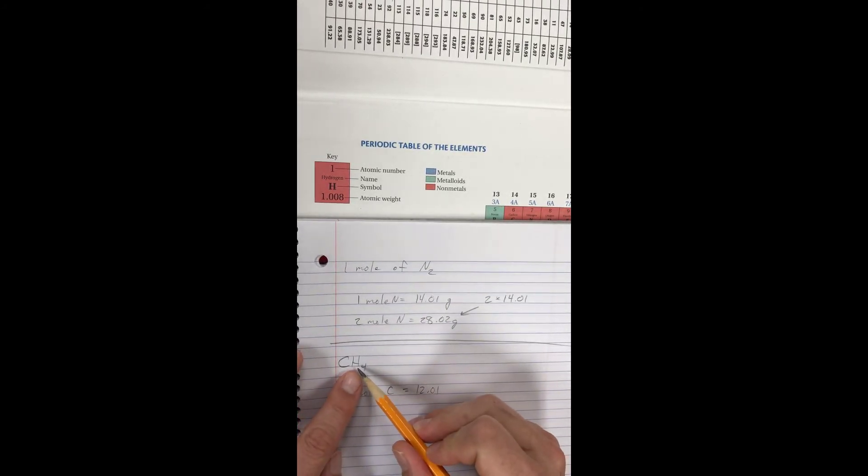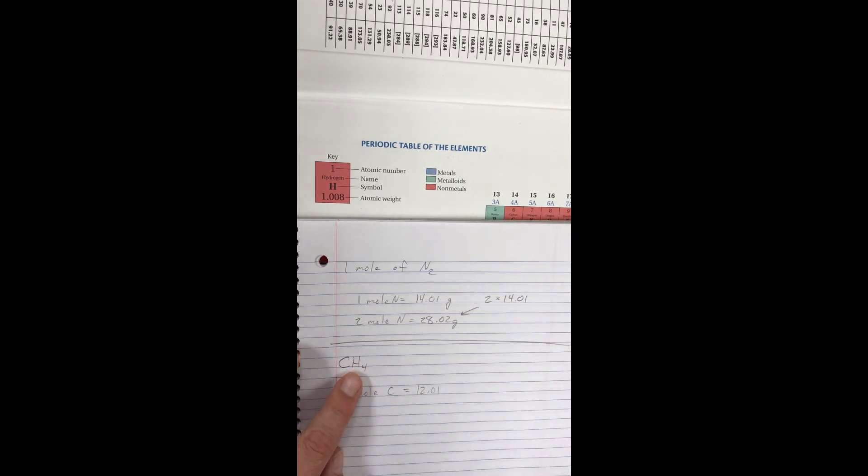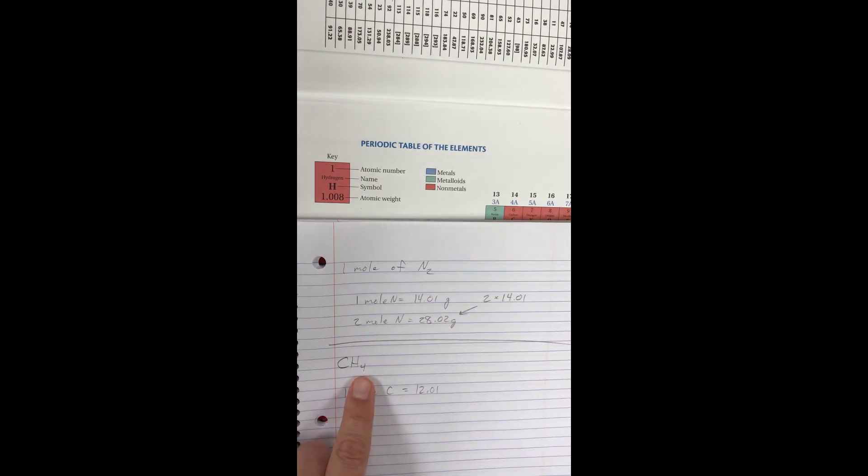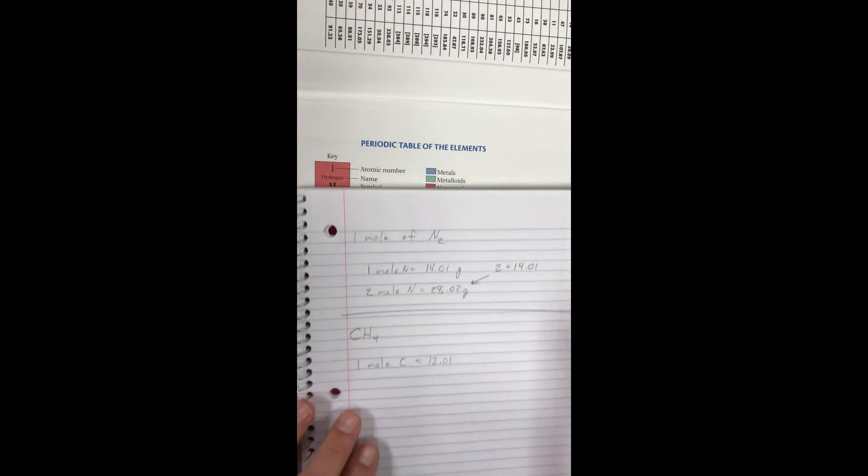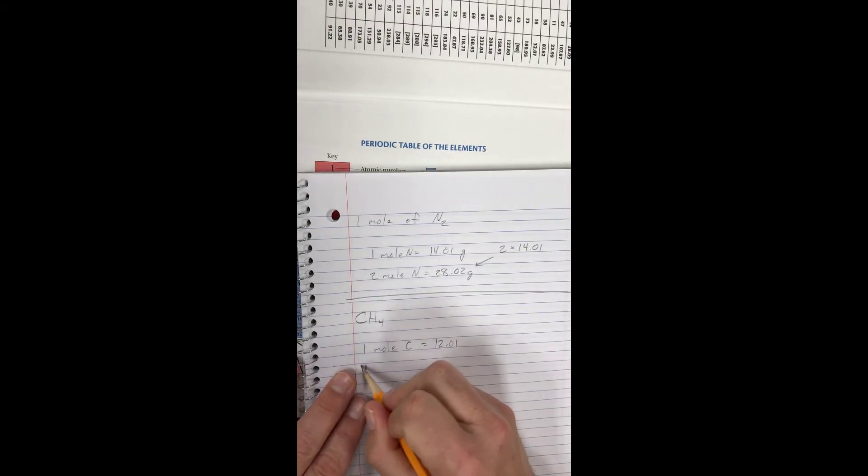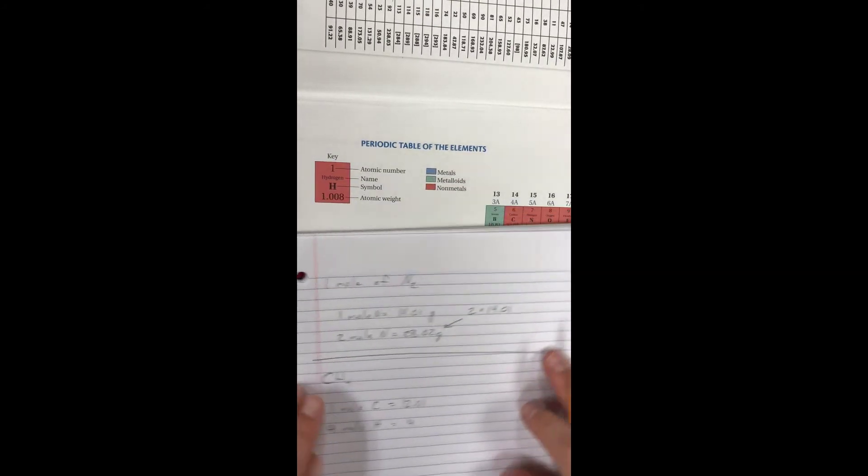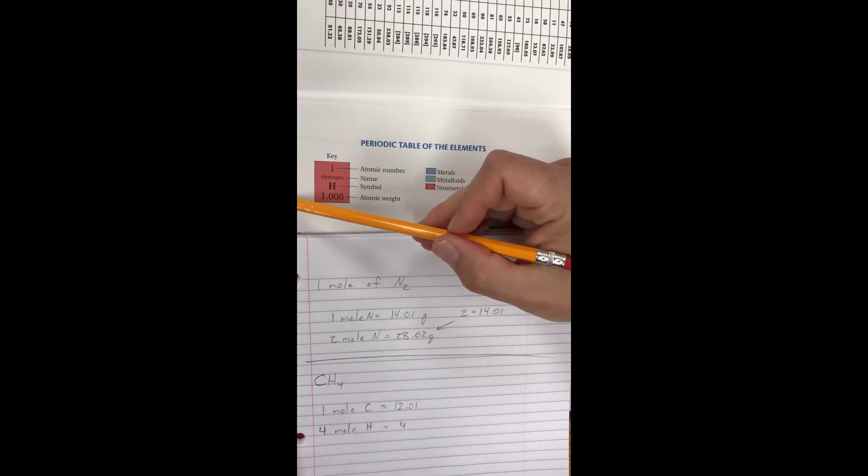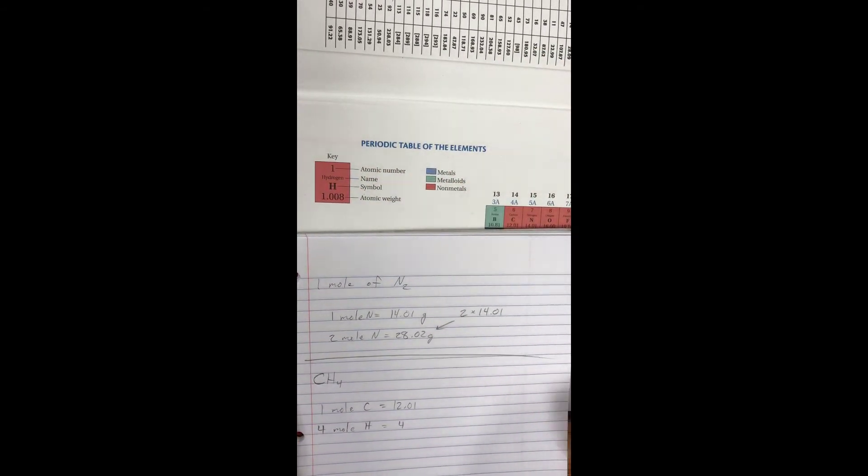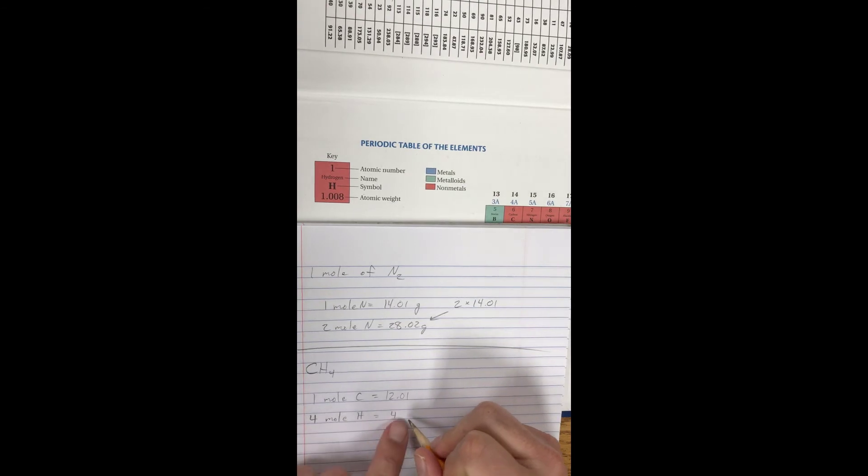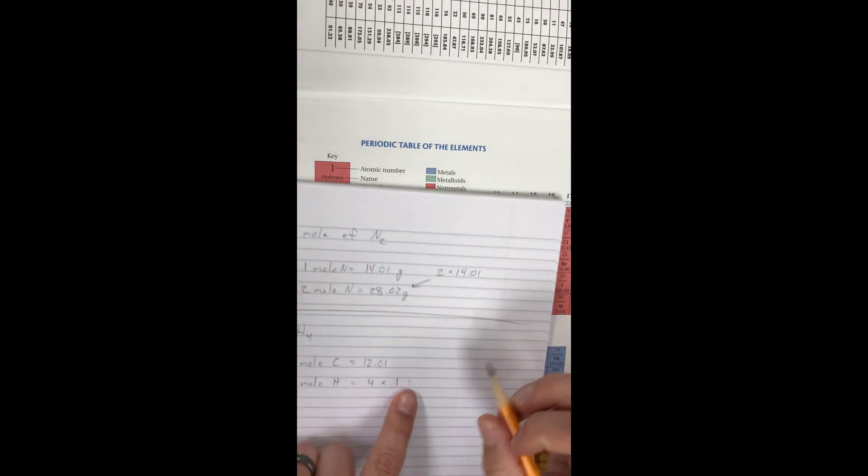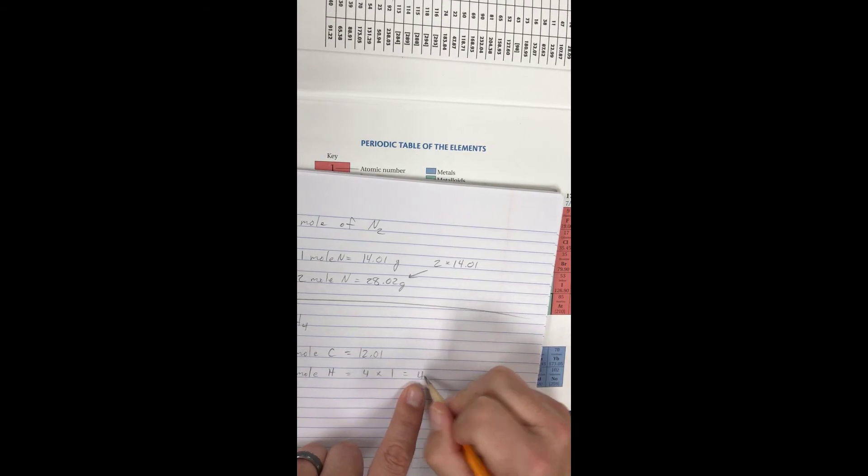But I have more than one hydrogen. So how many hydrogens do I have? There's four hydrogens. So I'm going to have four moles of hydrogen. Now each hydrogen, if we look here, is 1.008. I'm just going to round that to one. So I'm going to have to take my four times one, and that's going to give me a total of four.